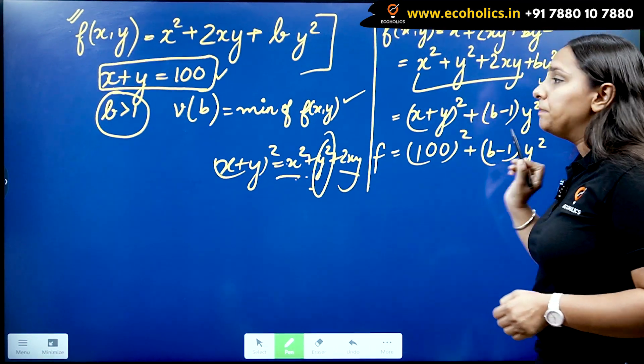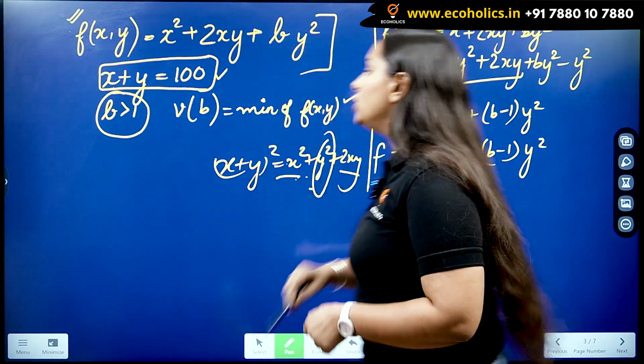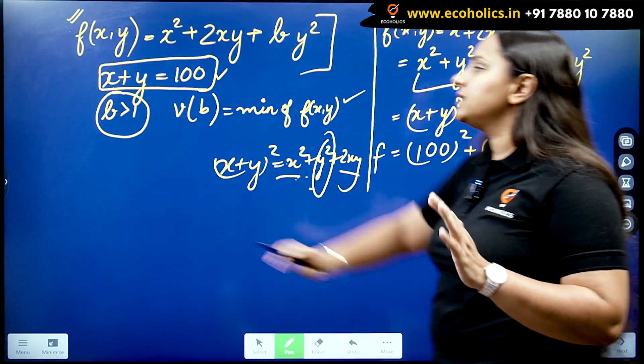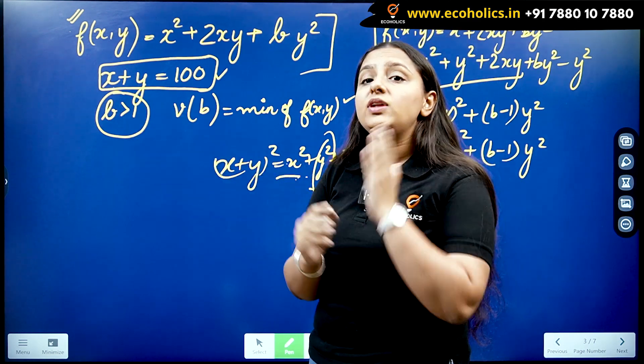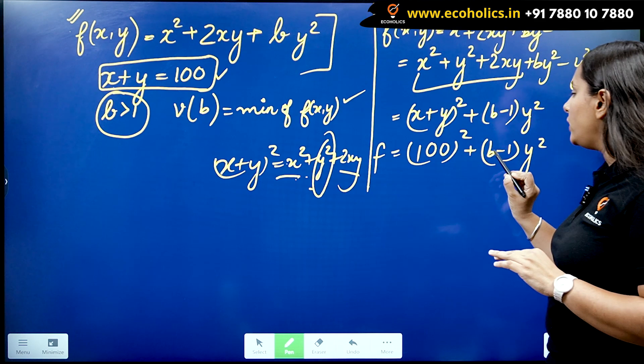Now I just need to put the value of x + y which is 100. Now since b is going to be always strictly greater than 1, so if whatever value, let's say it's going to be strictly greater than 1, even if the least value it takes 1.1, let us say.